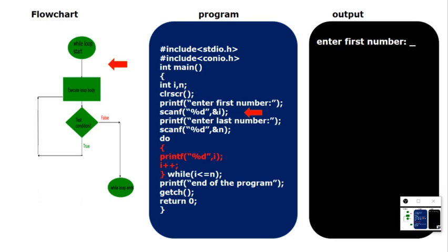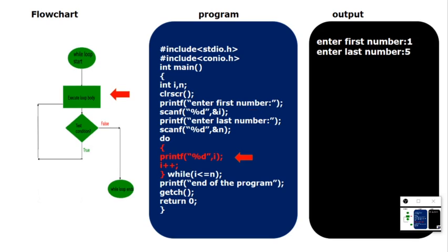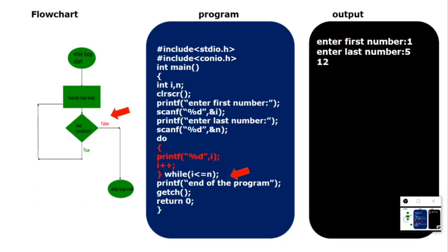Let's run the do-while program with the same setup — i is first value, n is last value. I enter 1 and 5. See — it does not check the condition first; it goes directly to printing. It prints 1, then i increments to 2. Condition 2 <= 5 satisfied, goes back to do, prints 2. This continues until it prints 5. Then i becomes 6, while condition checks 6 <= 5 — condition fails, exits the loop.